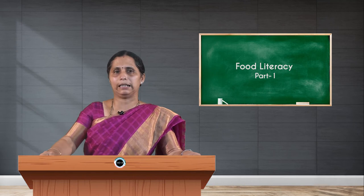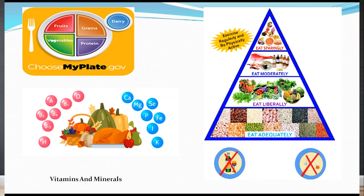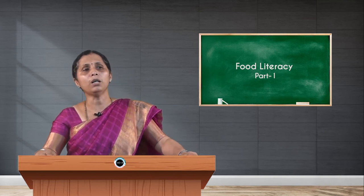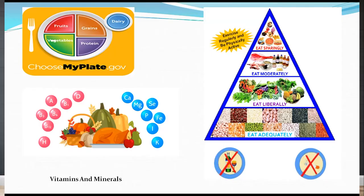Food to be taken adequately includes protein-rich foods, as they are the building factors. Food to be taken liberally includes fiber-rich foods, which are responsible for elimination and supply of minerals and vitamins. Foods to be taken moderately are spices. Foods to be taken very sparingly are high-calorie foods. This is how we design a food plate — not only for patients but also for healthy persons.